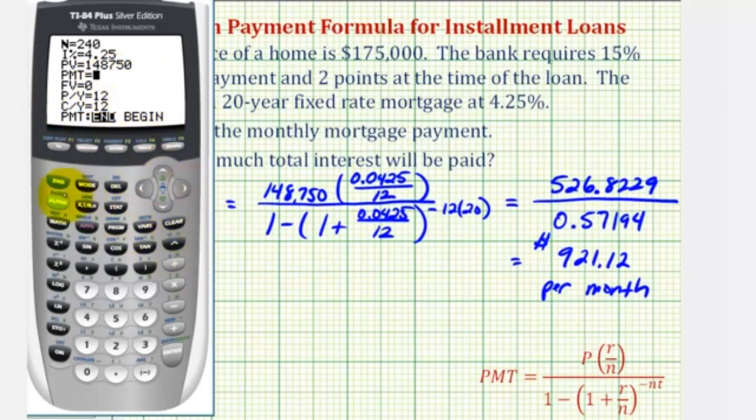So now we'll go back up to payment, clear this, and press alpha enter for solve. Notice how if we round this monthly payment to the nearest cent, it would be 921 dollars and 11 cents, and we came up with 921 dollars and 12 cents. That's because when we did it by hand, we actually rounded the numerator and denominator. I'm going to go ahead and use this monthly payment here because I realize that some of us might not have access to this type of program.